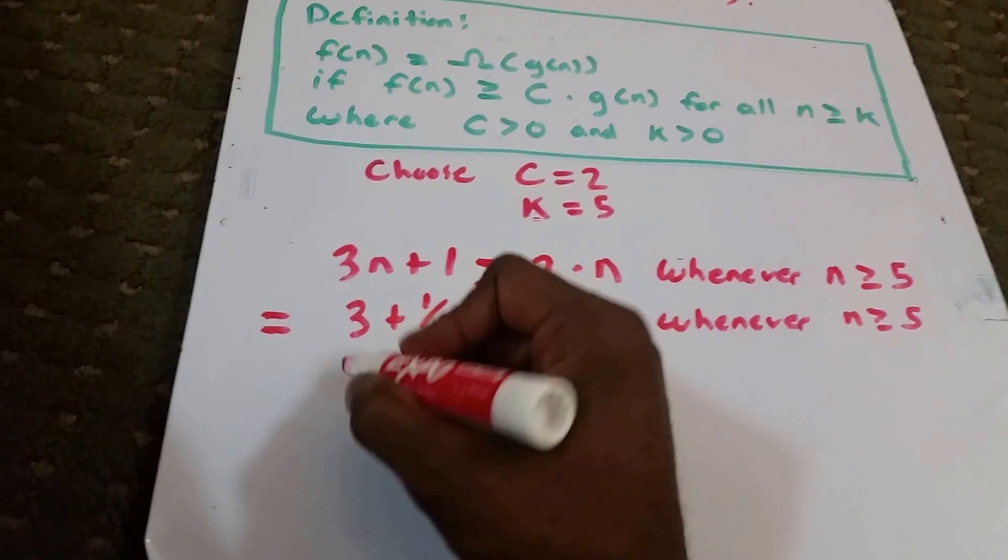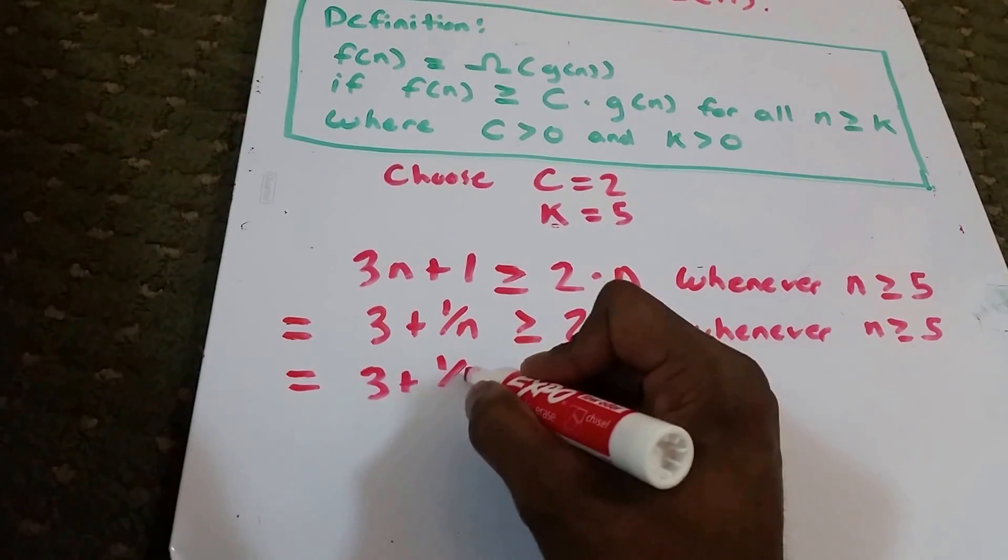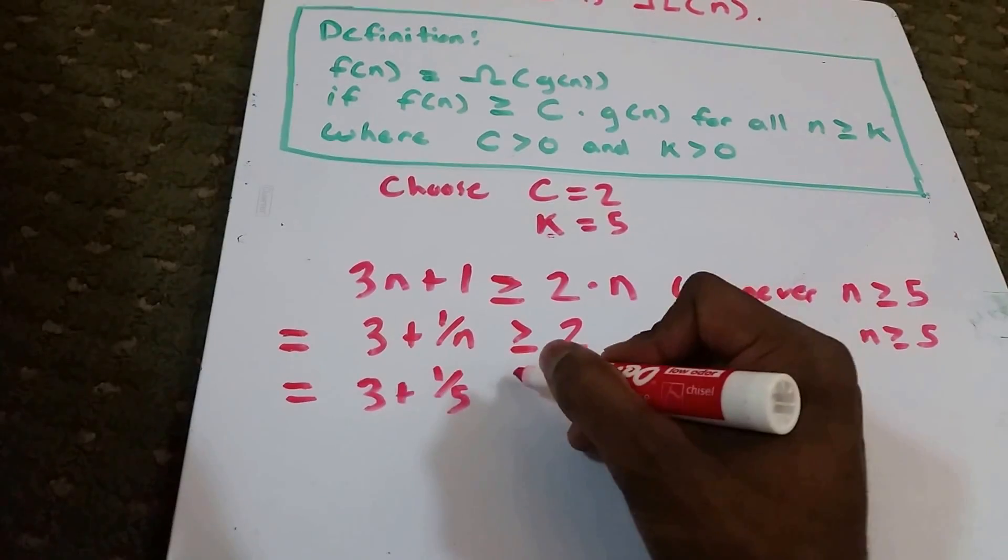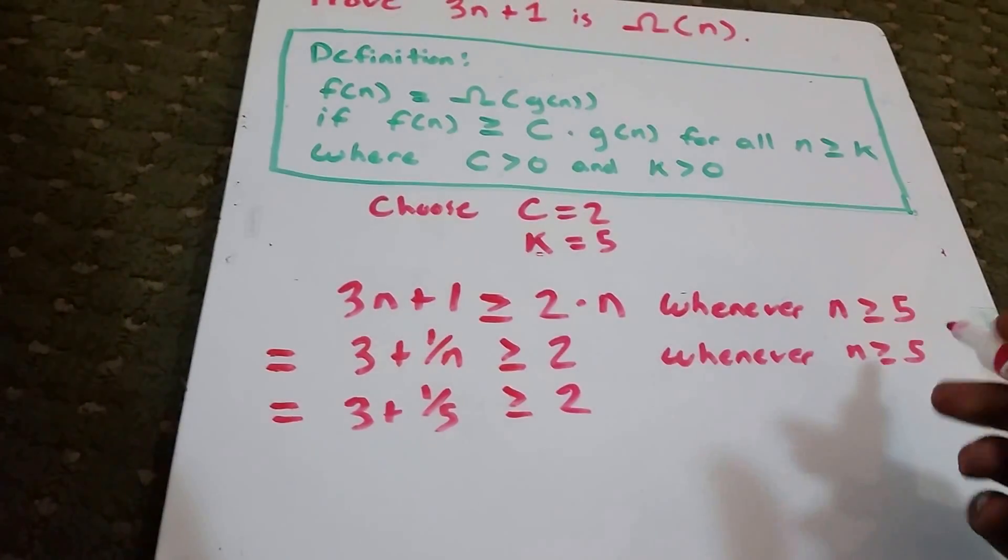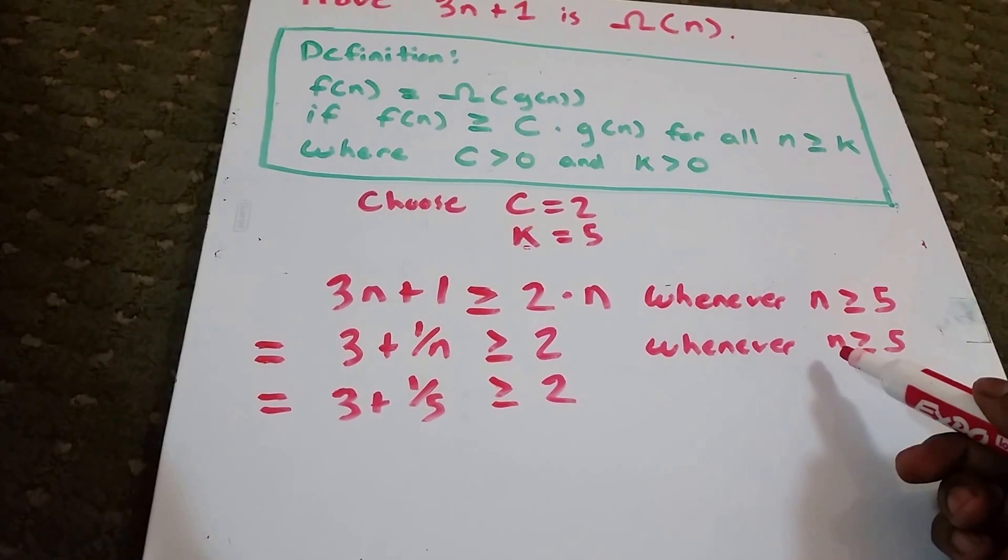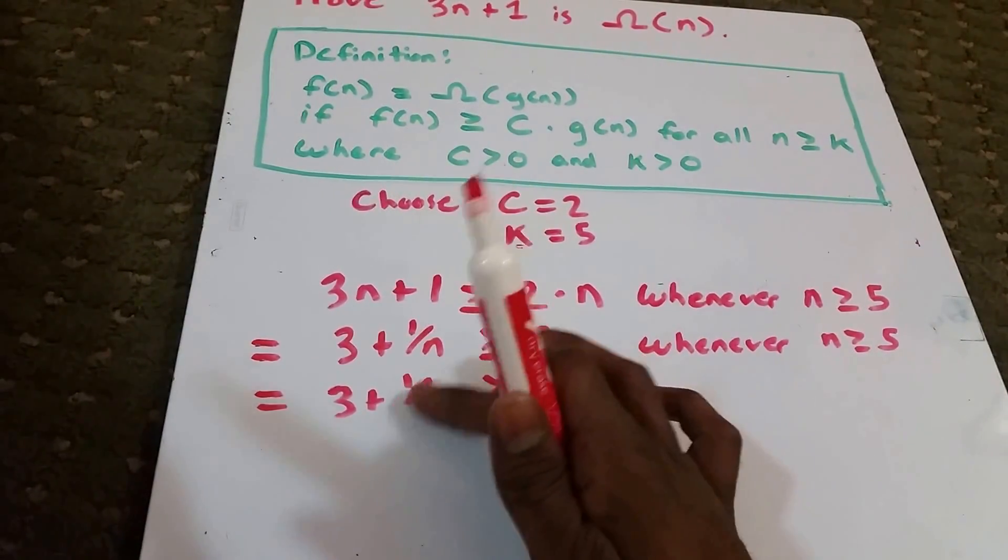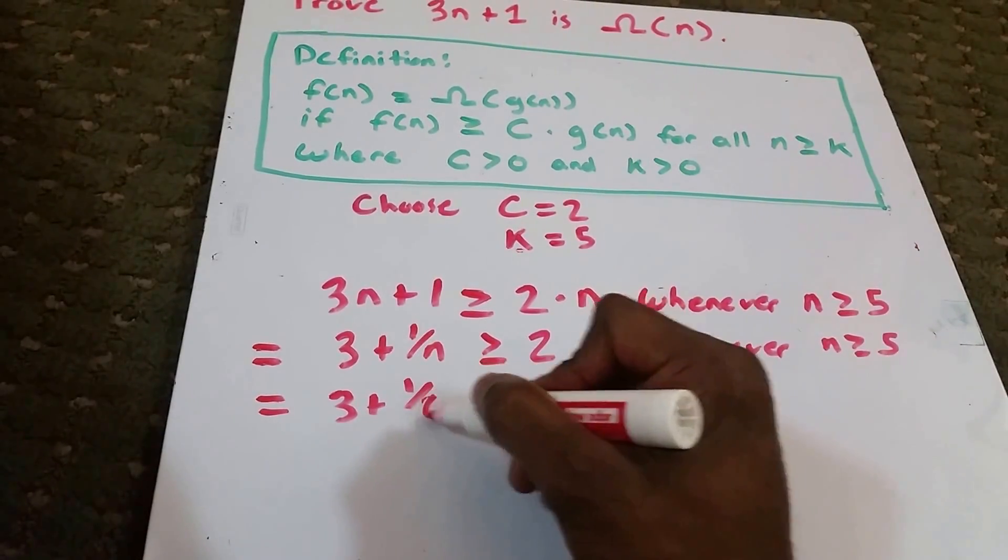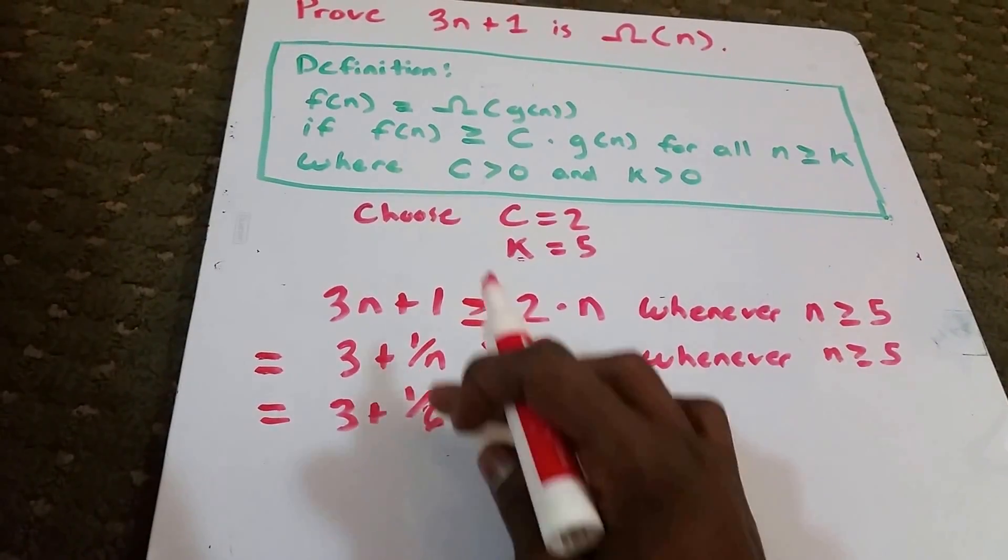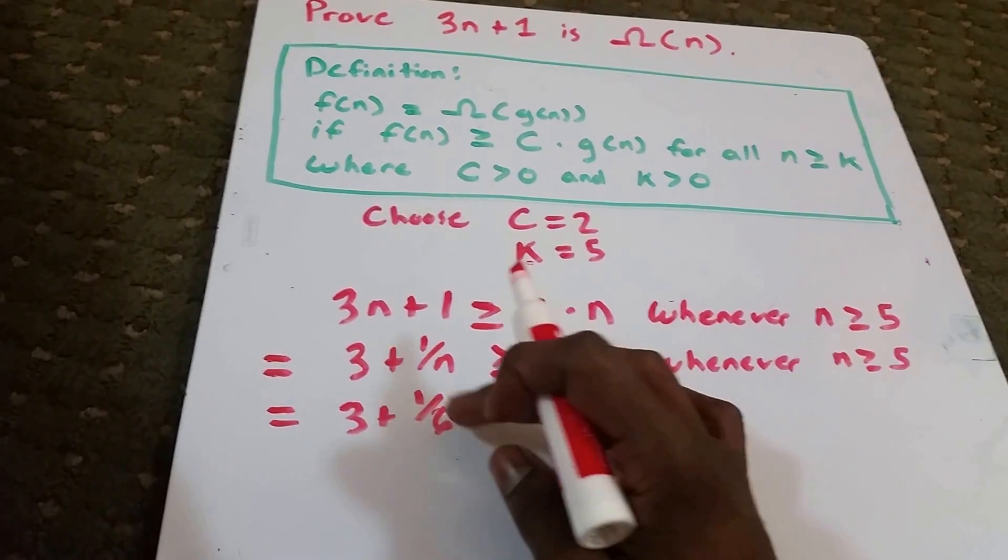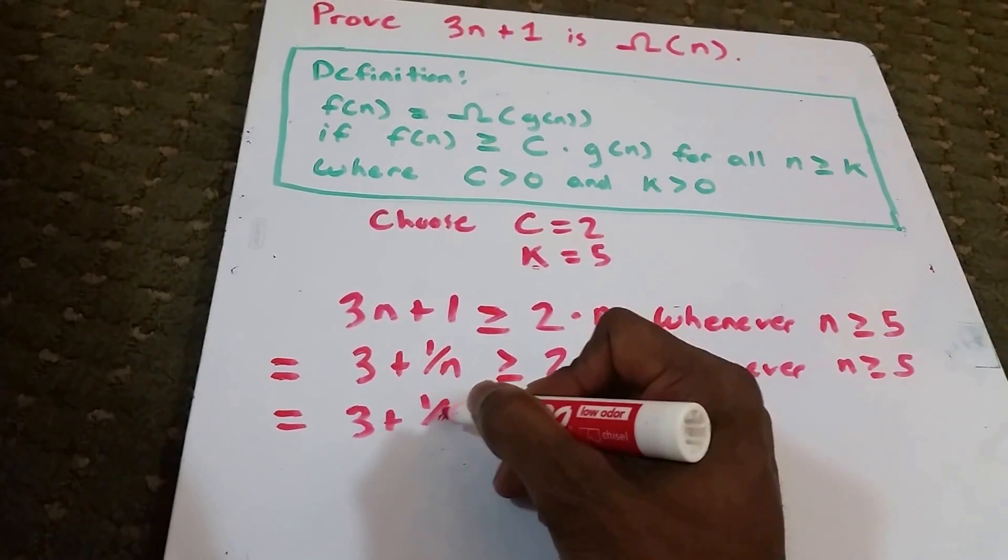So that would give us 3 plus 1 divided by 5 is greater than or equal to 2. Let's suppose we chose another value for n like 6, because n can be greater than or equal to 5. But as this denominator increases, the whole value decreases. So the maximum that this can be is 5.